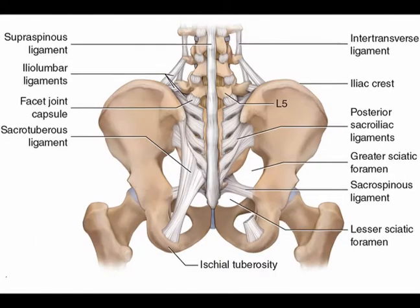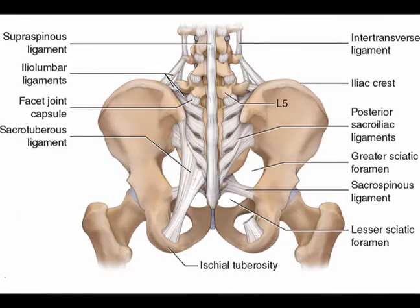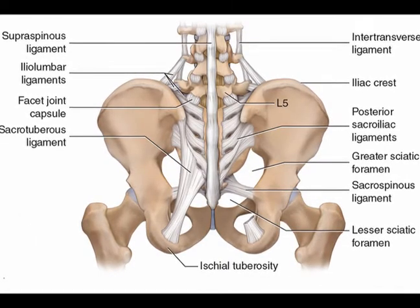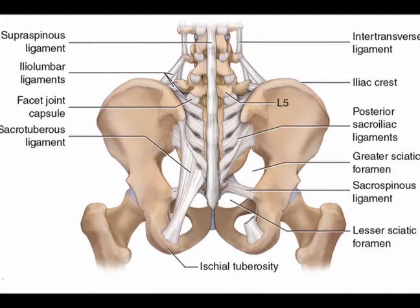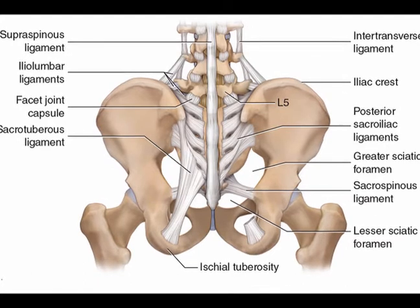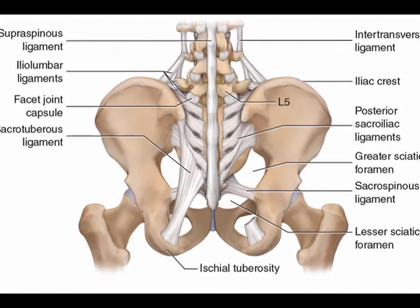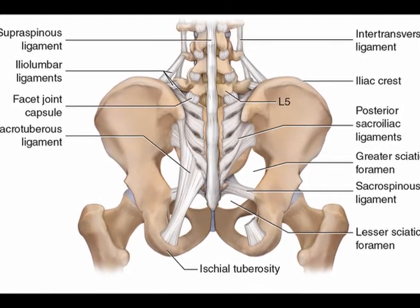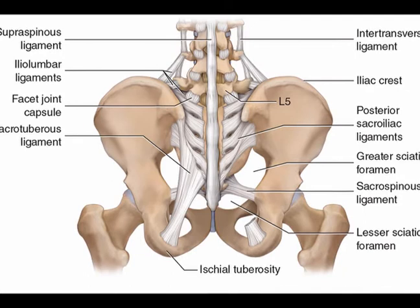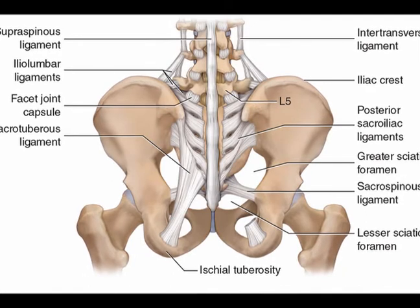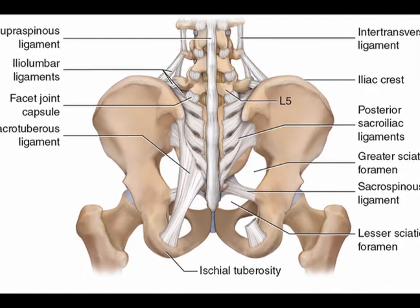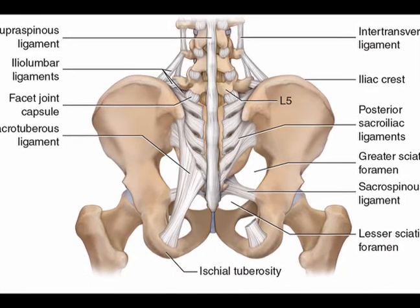The posterior sacroiliac ligament connects the posterior superior iliac spine, often abbreviated to the PSIS, and the iliac crest to the third and fourth segments of the sacrum.